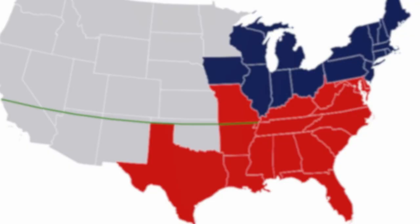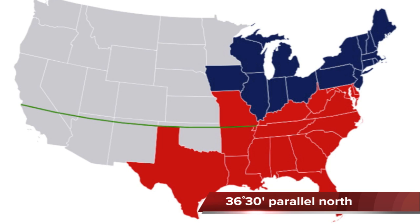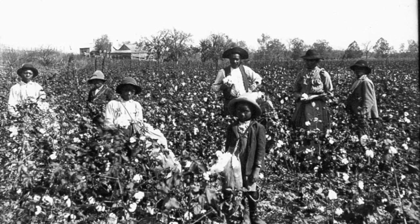First, slavery would be prohibited north of Latitude Line 36.5 degrees. South of the line, slavery was hereby recognized and could not be interfered with by Congress. Second, Congress was forbidden to abolish slavery within a slave state, even if that area was under their jurisdiction, such as a military post.